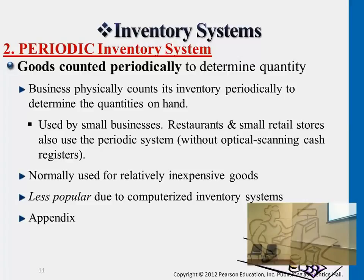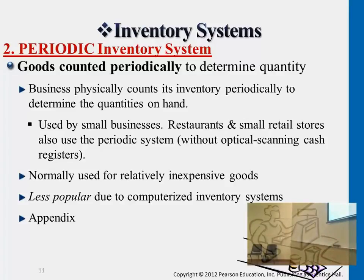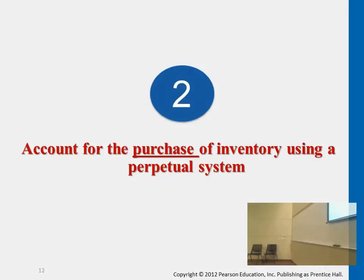Our focus — all the transactions and journal entries covered in today's course and on Wednesday — is the perpetual inventory system. You just need to know there are two types and we'll be focusing more on the perpetual one. Periodic inventory journalization is a little different; the general idea is the same, but the details on journal entries — debits, credits, and the accounts — are a little different from perpetual. Alright, let's move on to journal entries.